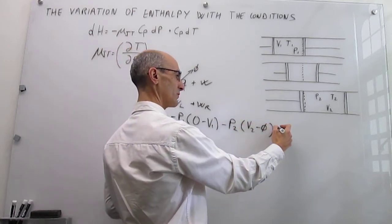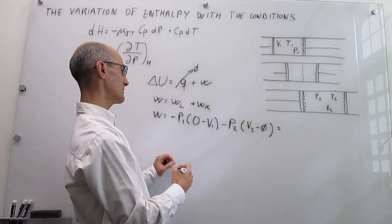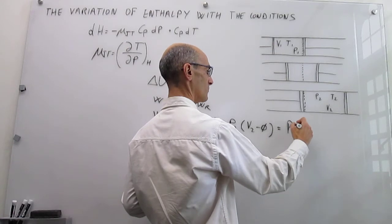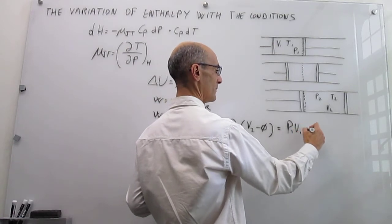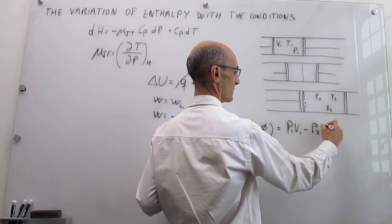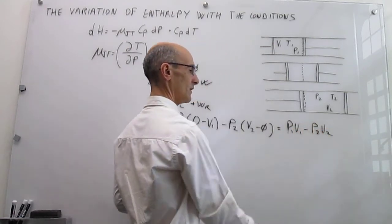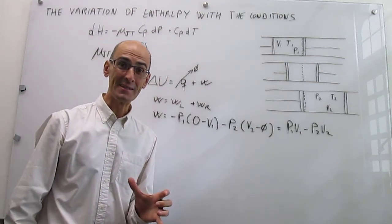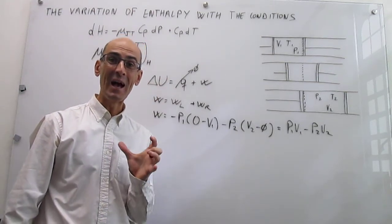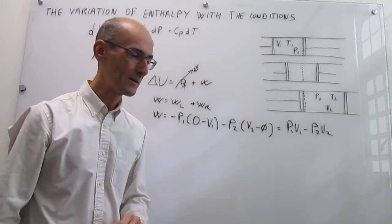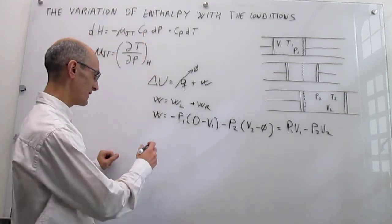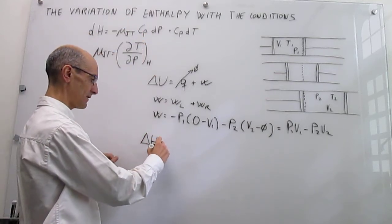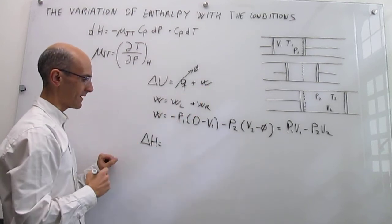Putting all this together, the change in internal energy equals P1V1 minus P2V2. Our goal is to demonstrate that this adiabatic expansion is isenthalpic, so we now calculate the change in enthalpy for this process.